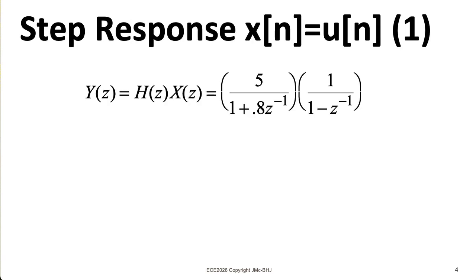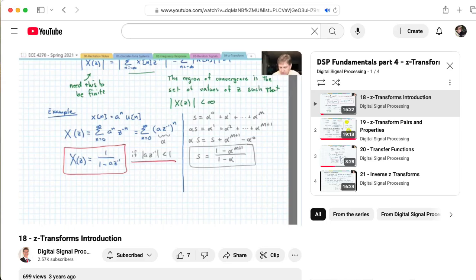For the second case, we'll figure out what the output is if the input is a unit step function. To do this with Z-transforms, remember that convolution in the time domain corresponds to multiplication in the Z-transform domain. Here I have the system function, and I'll just multiply that by the Z-transform of the unit step function, which is 1 over 1 minus Z to the minus 1. This is like our usual a to the n un pair with a equals 1.